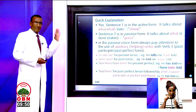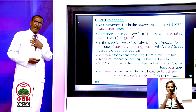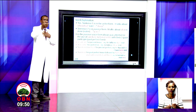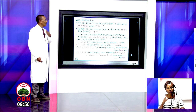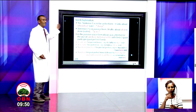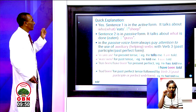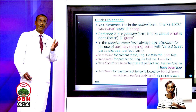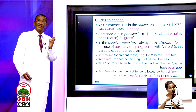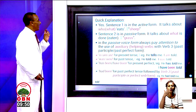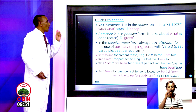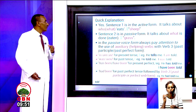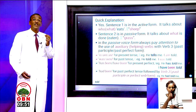Let me explain why we say active and passive. Sentence one is in active form. It talks about who or what eats grass — and that is a sheep.